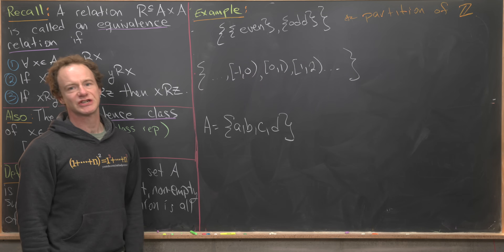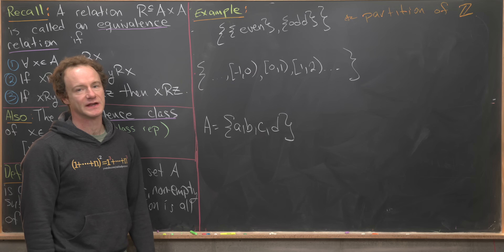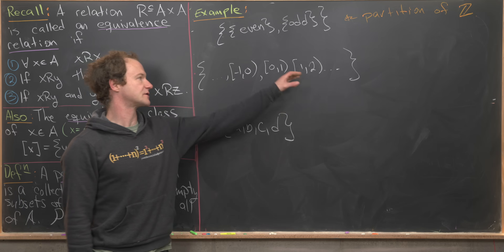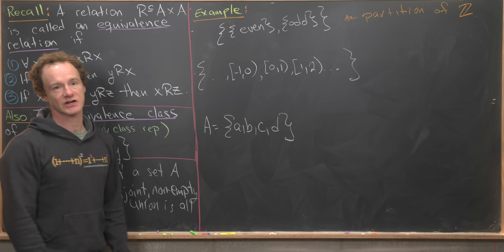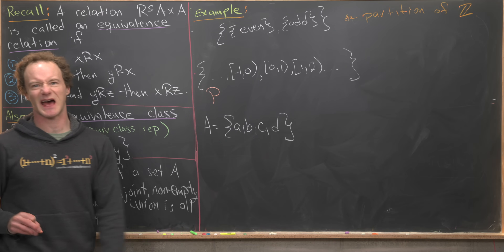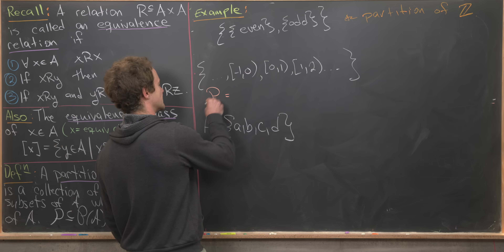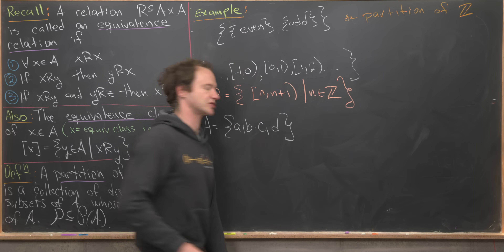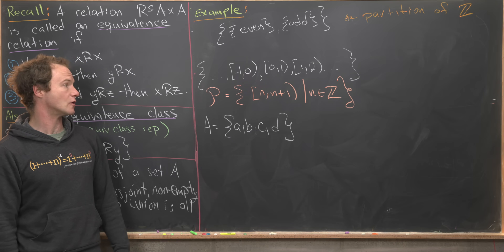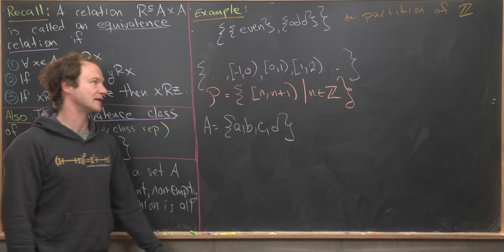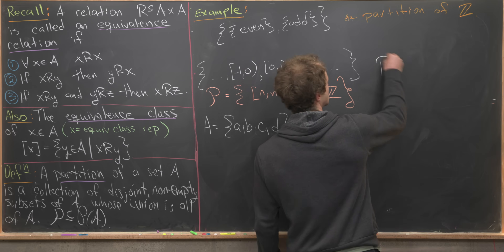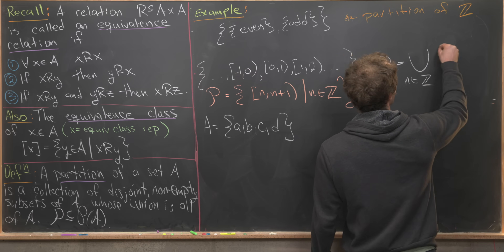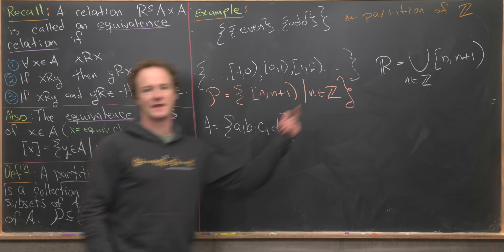Here's a partition of the real numbers made up of half-open intervals: the interval from negative one to zero (including the left endpoint), zero to one, one to two, and so on in both directions. We can write this partition as an indexed collection: P is the set of all intervals [n, n+1) where n ranges over all integers. These are non-overlapping because each interval includes the left endpoint but not the right, and they union to give all of the real numbers.